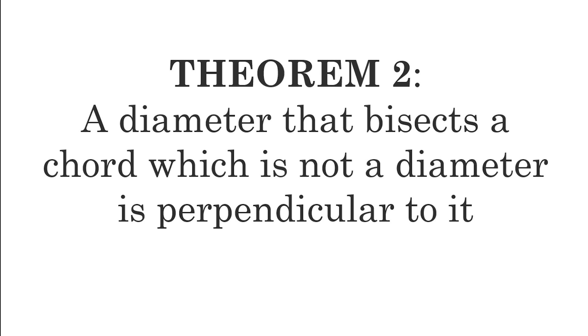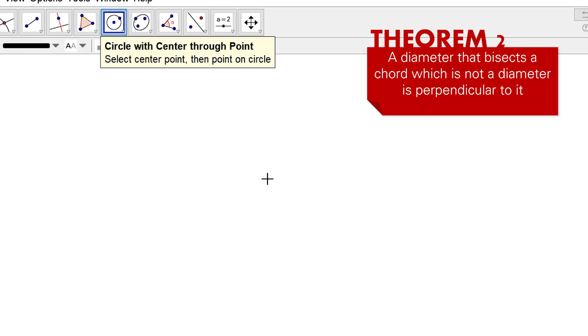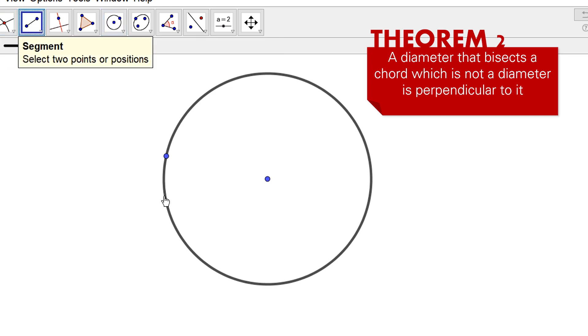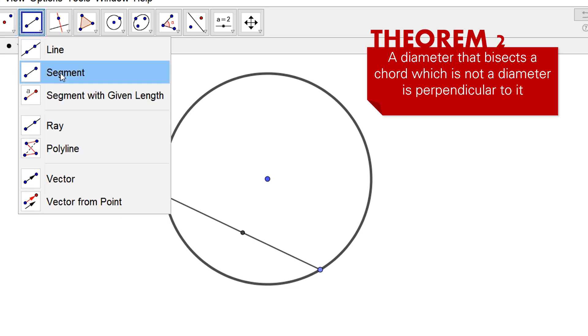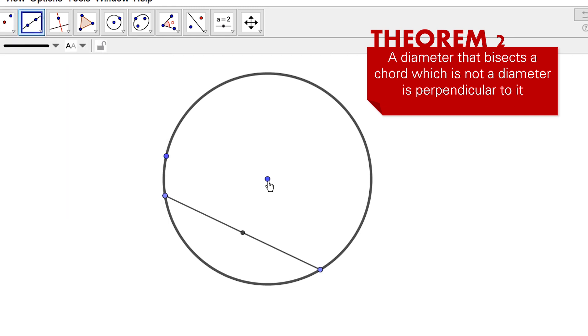So let's first show this using GeoGebra. Let's create a circle. And then a diameter bisects a chord. So let's have a chord first. And then to bisect is to pass through the midpoint. So let's locate the midpoint of this line segment. There's the midpoint. And let's draw a line passing through the center and the midpoint.